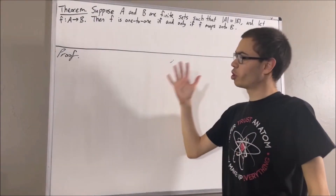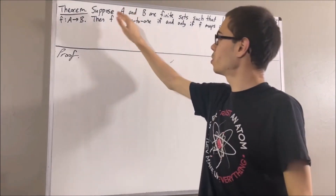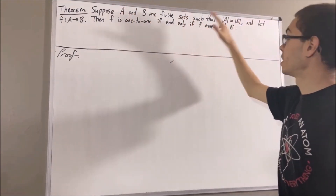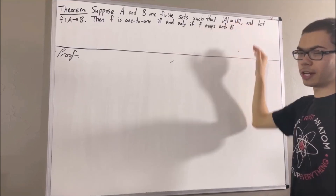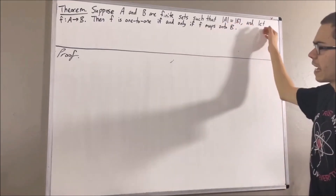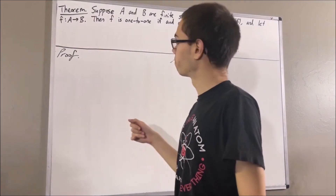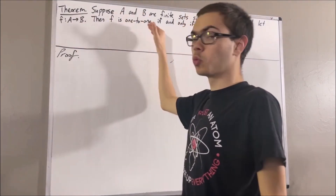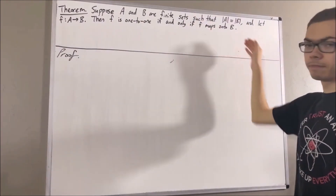In this video, we are going to prove the following theorem. Suppose A and B are finite sets such that the cardinality of A is equal to the cardinality of B. Let F be a function from A to B. Then F is one-to-one if and only if F maps onto B.